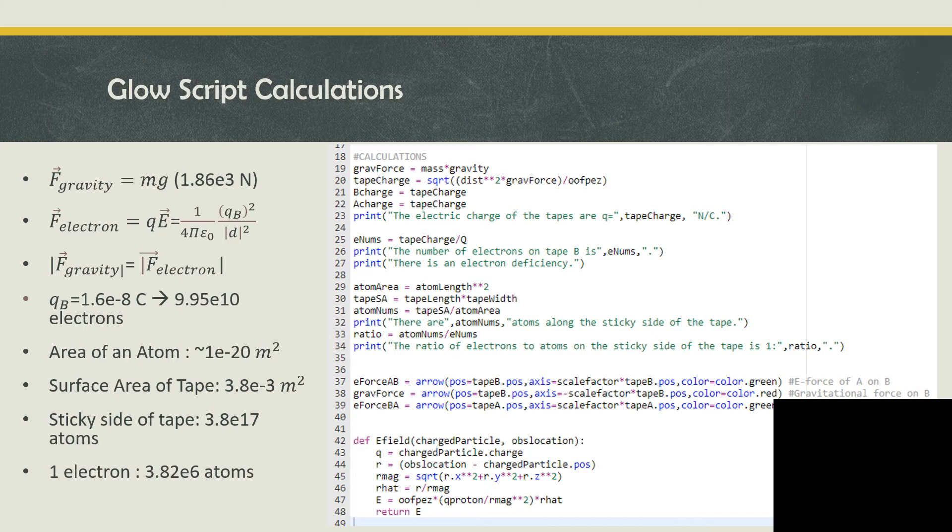If we take the surface area of either piece of tape, which is 3.8 times 10 to the negative 3 meters squared, and divide by the average area of an atom, which is 1 times 10 to the negative 20 meters squared, we can also find that there are 3.83 times 10 to the 17 atoms on the sticky side of either one of our tapes, and that there is one electron for every 3.82 times 10 to the 6 atoms on the pieces of tape. Since the tapes are positively charged, they have a deficiency of electrons.